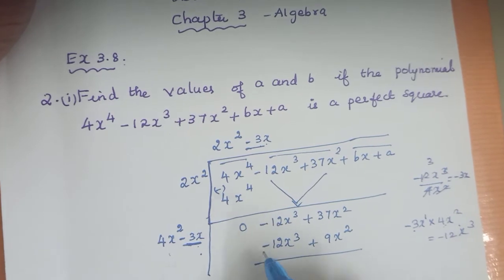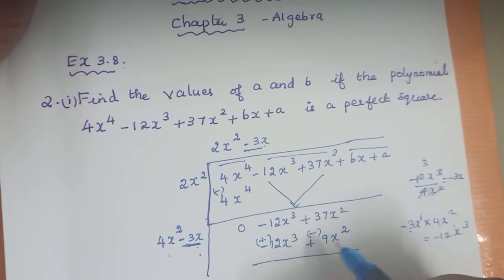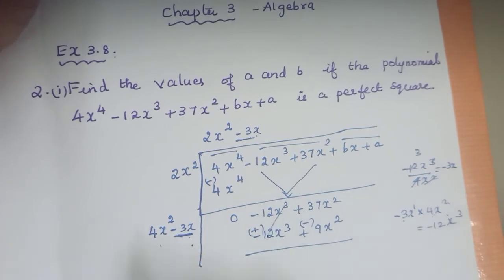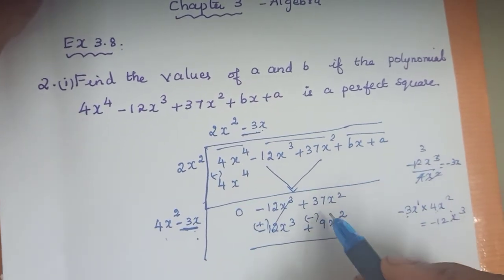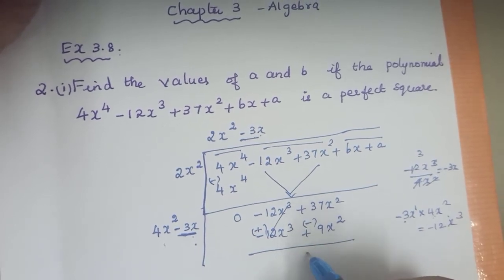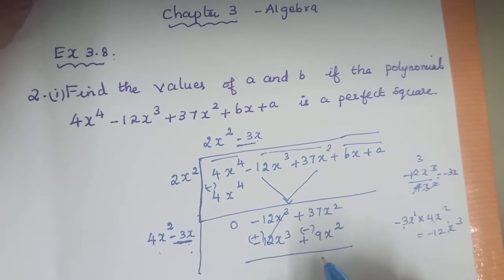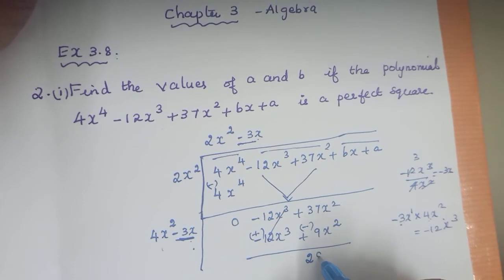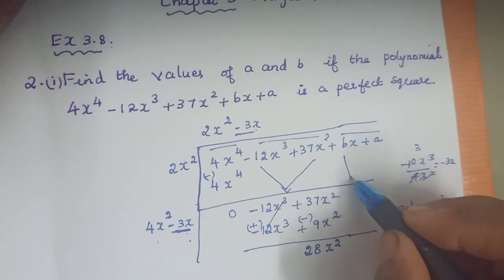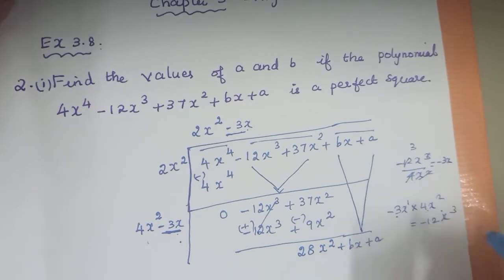Do the subtraction. The minus 12x cube plus 12x cube cancel. Both are similar terms, minus and plus. Next, 37x square minus 9x square gives 28x square. Now you have to bring both the remaining terms down: plus bx plus a.